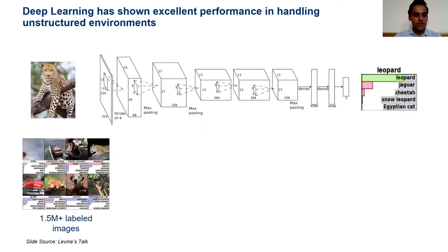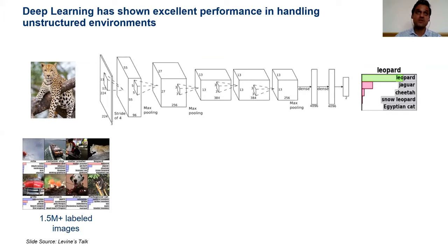Recently we have seen the success of deep learning — or neural networks — mostly in supervised settings. Deep learning is a technology that helps us handle unstructured environments. A giant neural network, such as a convolutional neural network for image classification, trained on large datasets like ImageNet, has shown quite nice success. This kind of network can generalize to unseen scenarios and is able to deal with natural inputs like images. It has shown success in computer vision, speech translation, and other application domains.